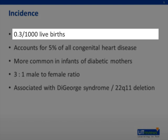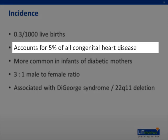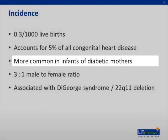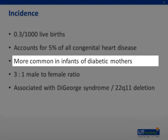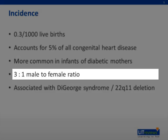The incidence of transposition of the great arteries is 0.3 per 1,000 live births and accounts for 5% of all types of congenital heart disease. Transposition is more common in infants of diabetic mothers, and this is not completely understood. There are more male children affected, with a 3 to 1 male to female ratio.